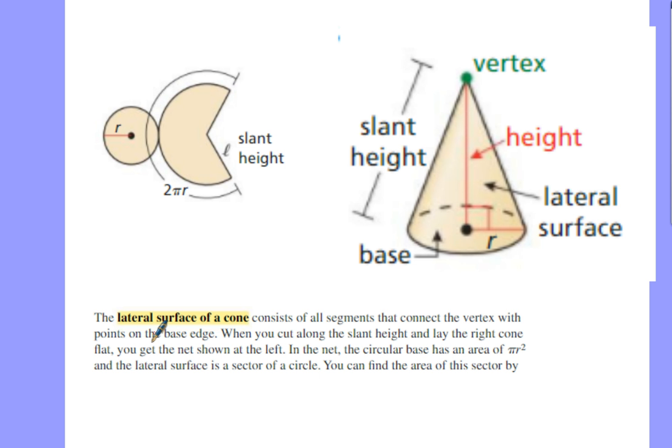So the lateral surface of a cone, just specifically speaking, consists of all of the segments that connect the vertex with points on the edge of its base. So if you just drew a line down to every single part of this base of the circle.